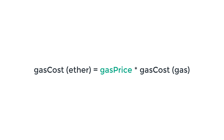Then you have the gas price — that's how much Ether you are willing to pay for each unit of gas. This is freely set by the sender of the transaction. If you want, you can set this parameter to zero, but no miner will mine your transaction because it won't be interesting for them. So if you want your transaction to be mined, you need to set the gas price at an interesting level for miners. When you multiply the gas price and the gas cost in gas, you get the gas cost in Ether.